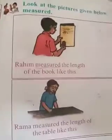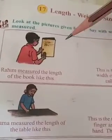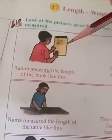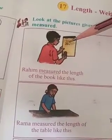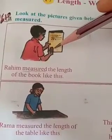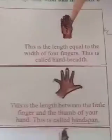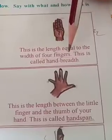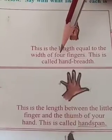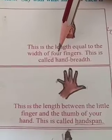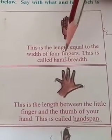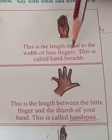So, in previous class 2, what we are learning? Raheem measured the length of a book, like this only. This is called what? Four fingers. Four fingers spelling: F-O-U-R, F-I-N-G-E-R-S. Fingers. Four fingers.